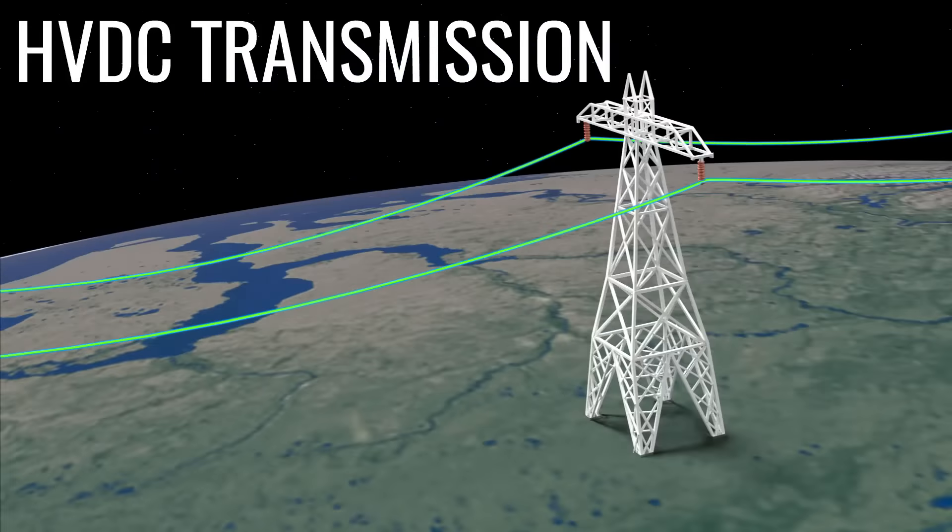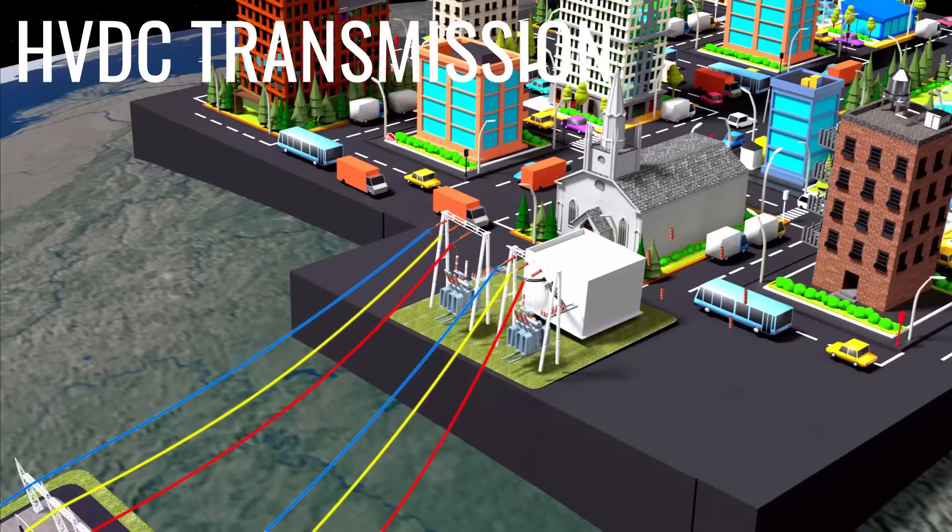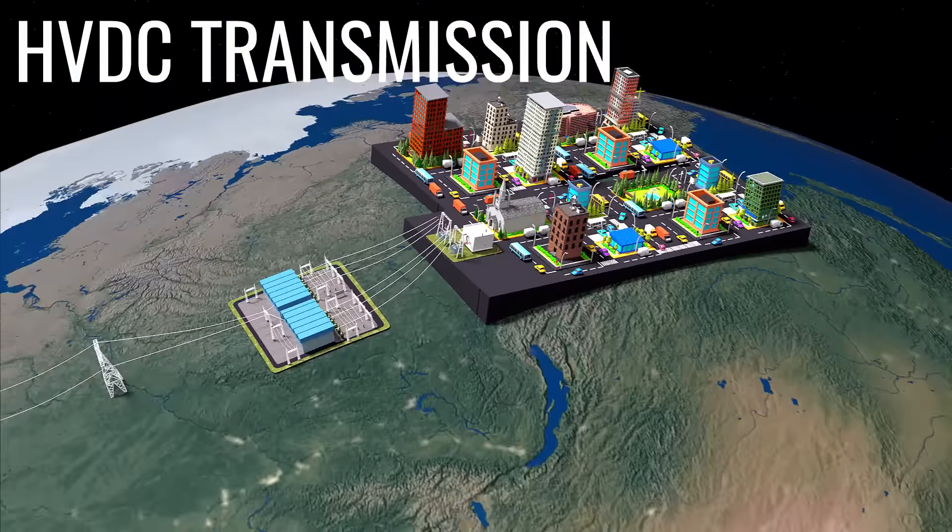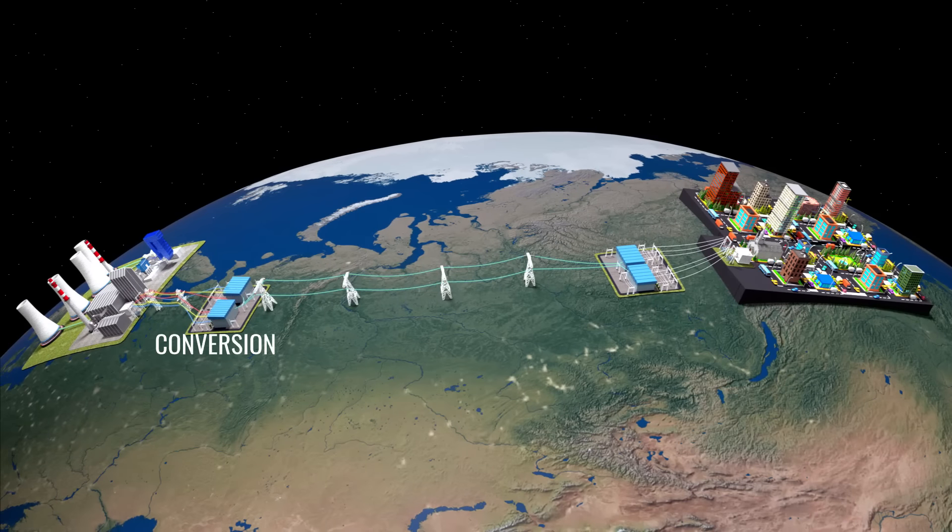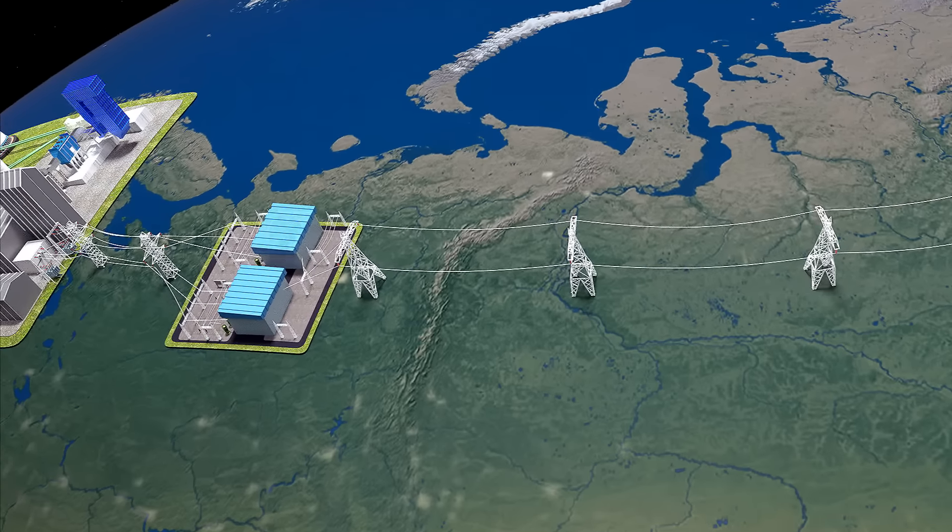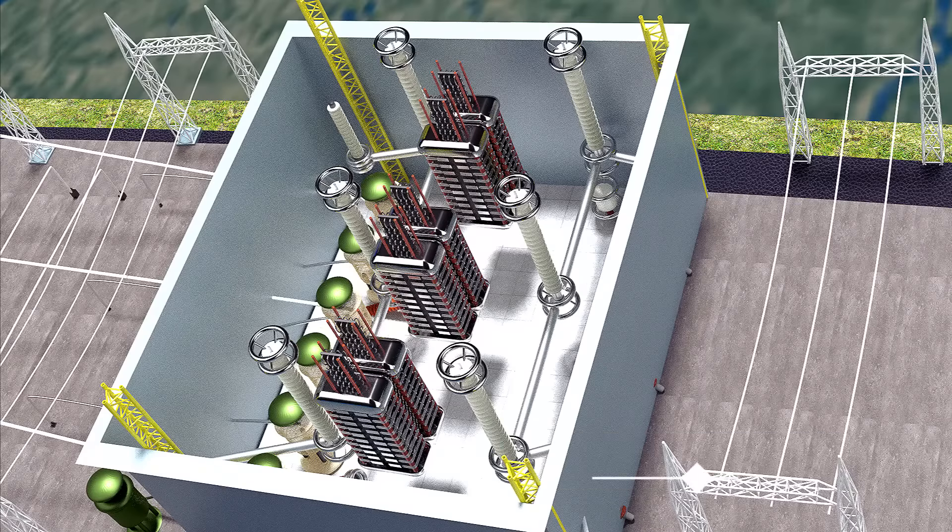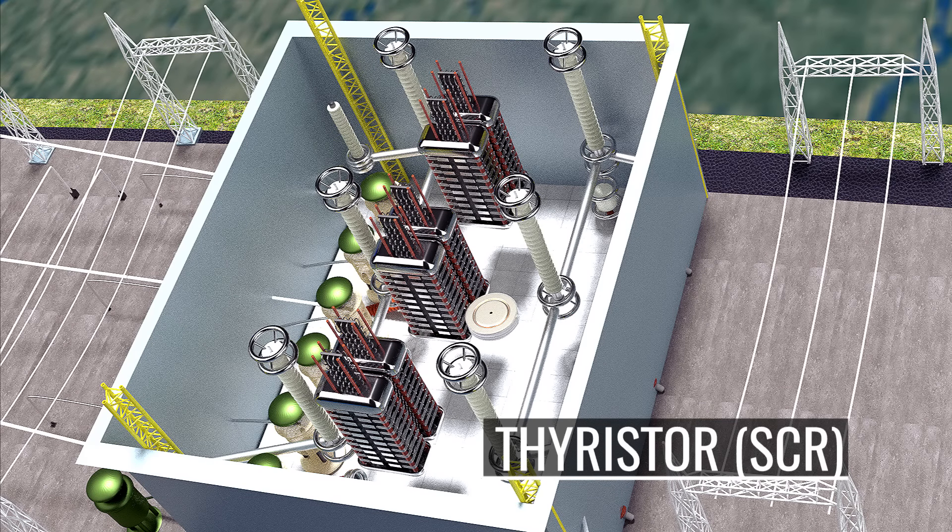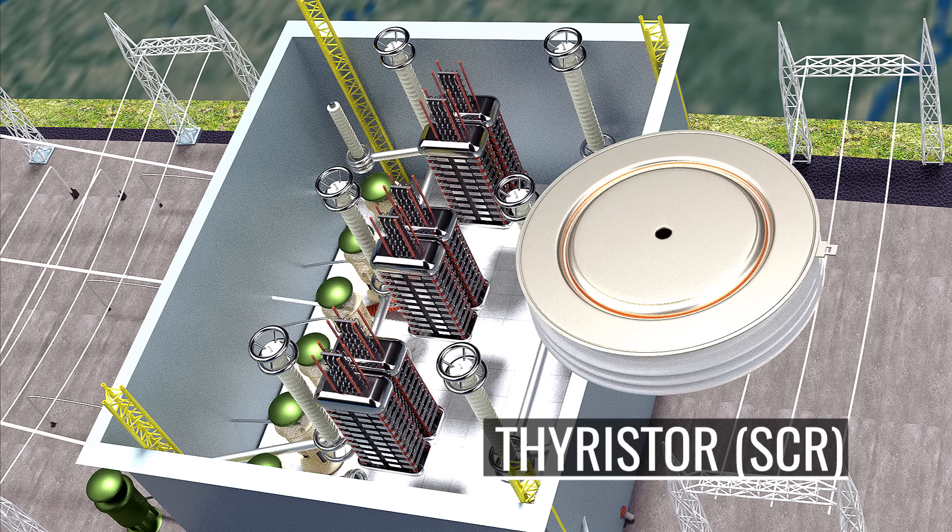After that, the DC power is transmitted to the consumers. This important task of conversion is performed by a unique semiconductor switching device called a thyristor, more specifically by silicon-controlled rectifiers. Let's explore how a thyristor works.